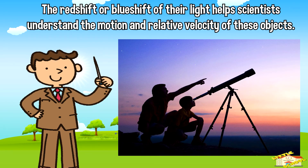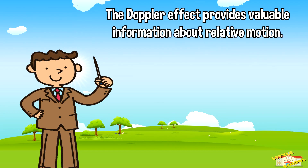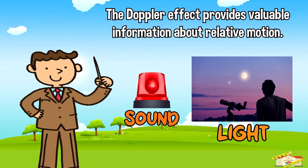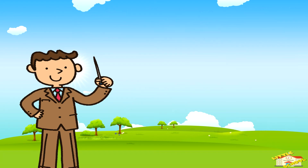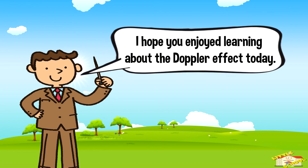The red shift or blue shift of their light helps scientists understand the motion and relative velocity of these objects. In summary, the Doppler effect is all about how waves appear different when the source of the waves or the observer is in motion. Whether it's changing the pitch of a siren or the shift in color of starlight, the Doppler effect provides valuable information about relative motion. And that is all for today's video — I hope you enjoyed learning about the Doppler effect!